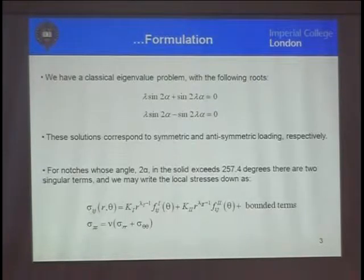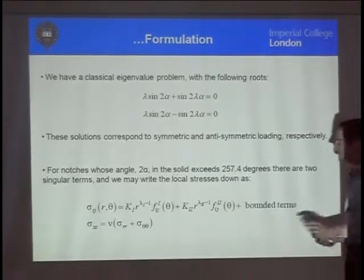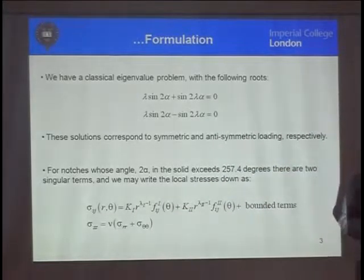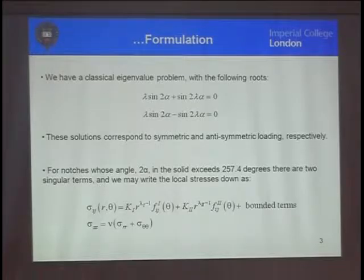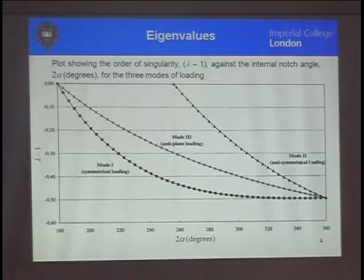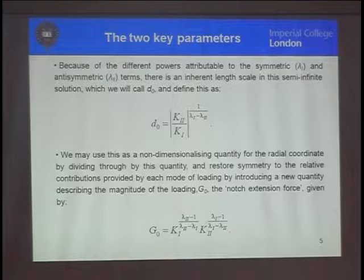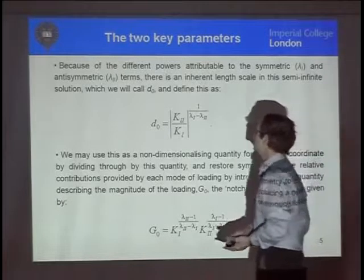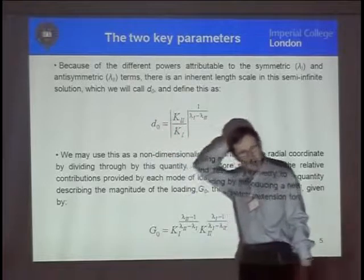Now, all of this talk, really, is talking about a way that we could perhaps recast this in a slightly different way, that will bring out an important feature of the solution when we're looking at notches and not cracks. And the substitutions are very simple. The first one is to define this number here, D₀, in that way.